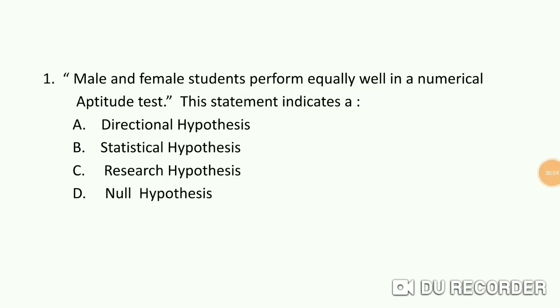Let's begin. Question number 1. Male and female students perform equally well in a numerical aptitude test. This statement indicates: Option A, Directional hypothesis; B, Statistical hypothesis; C, Research hypothesis; D, Null hypothesis.